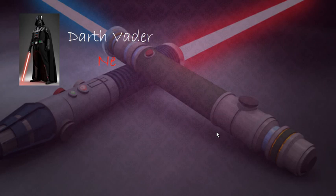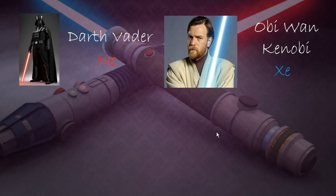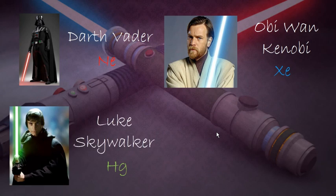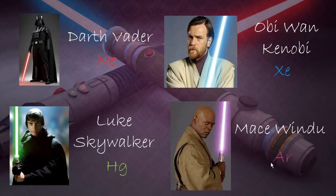Now let's look at the noble gases that various Star Wars characters would have used to make their lightsabers a reality. Darth Vader would have to use neon gas, because neon's emission spectrum emits red light. Obi-Wan Kenobi would have to use xenon gas, because that emits blue light. Luke Skywalker would have to use mercury, because that emits green light. Mace Windu would have to use argon, because argon's emission spectrum produces his distinctive blade color.